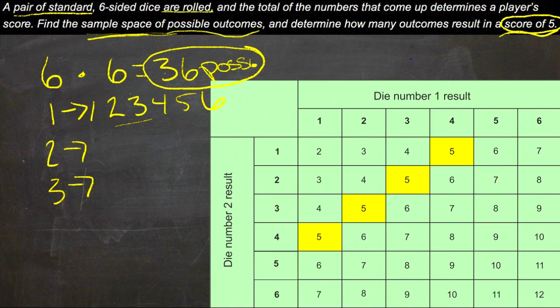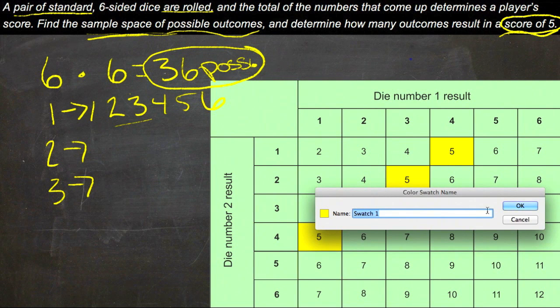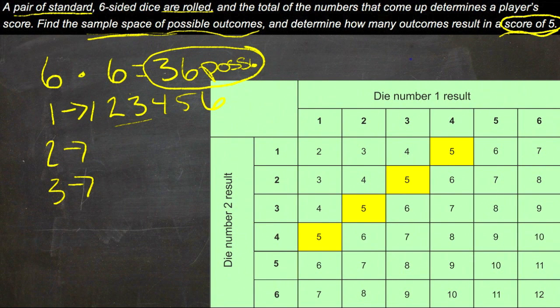I went ahead and copied the chart from the text. We can see here that they drew the numbers that one die could be across the top and then the numbers that the other die could be down the side, and then just totaled up which ones added to be five. Either we get a one on the first die and four on the second, or a two on the first and three on the second, and so on.